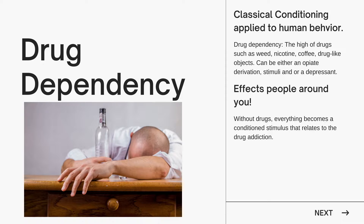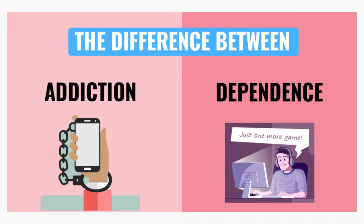Drug dependency is classical conditioning applied to human behavior. It's also important to note that drug dependency is affected by the people around you. Without the drugs, everything becomes a conditioned stimulus related to that addiction. The drugs in question could be stimuli such as a depressant, an upper, a downer, or an opioid. Many drugs that fall under this type of stimuli include nicotine, weed, coffee, or drug-like substances such as caffeine.